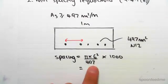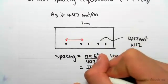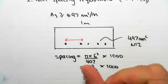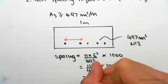So if we were to work this out, pi times 6 squared is roughly 113 over 497 times 1000. And this would give us a value of around 227.